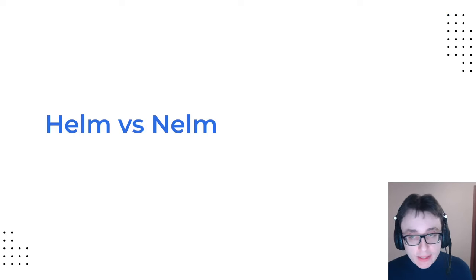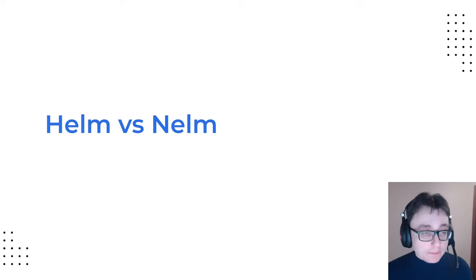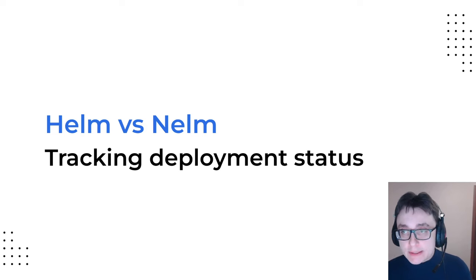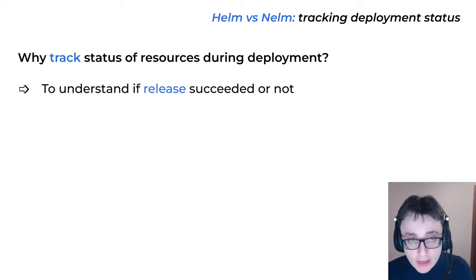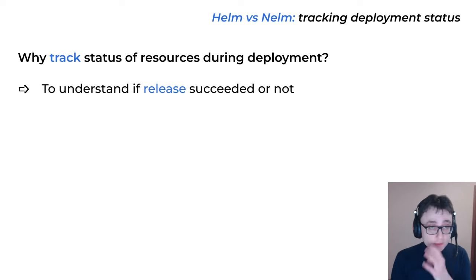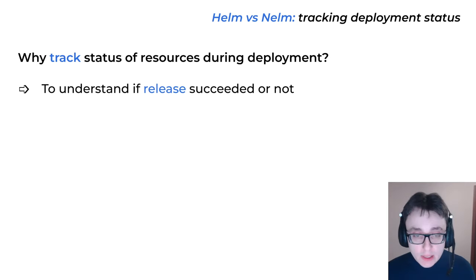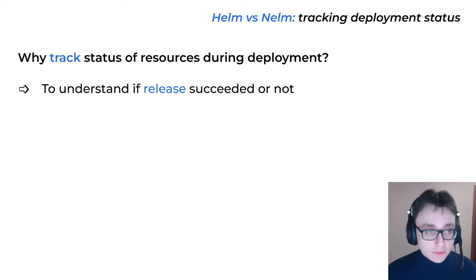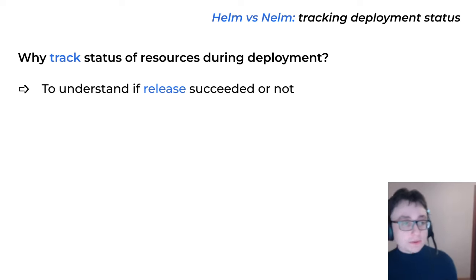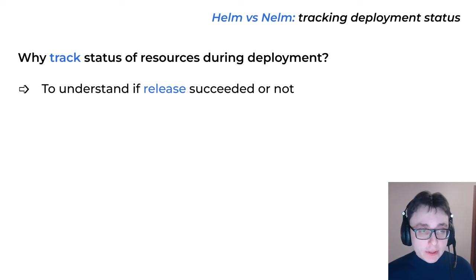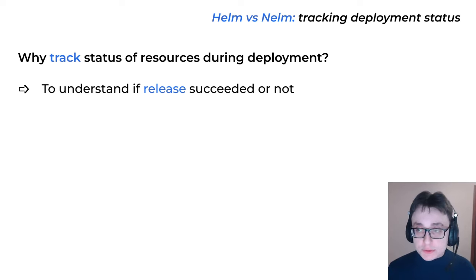How do Nelm and Werf differ from vanilla Helm 3? Let's start with how we track resources and how we determine the final release status. Why even track the status of resources during deployment? First, to understand if the release actually succeeded or not. It's not very helpful when your CI job is all green and Helm tells you everything is fine, but then you find out that some of your deployments failed — the containers are constantly restarting or something else.